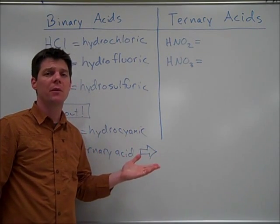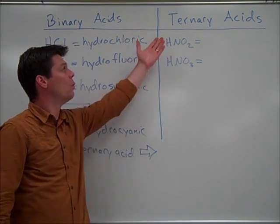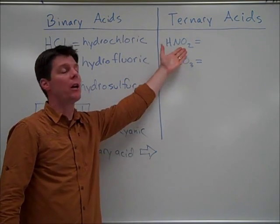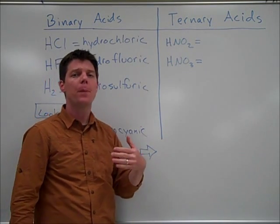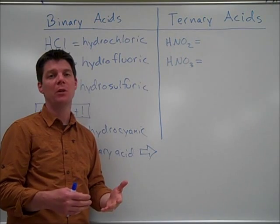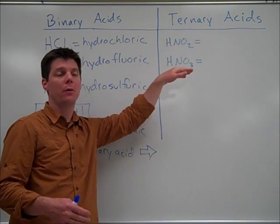Now let's take a look at some examples of ternary acids. We'll look at this example of HNO2 and HNO3. These are very similar acids. However, the names of them are going to need to tell us the difference between HNO2 and HNO3.